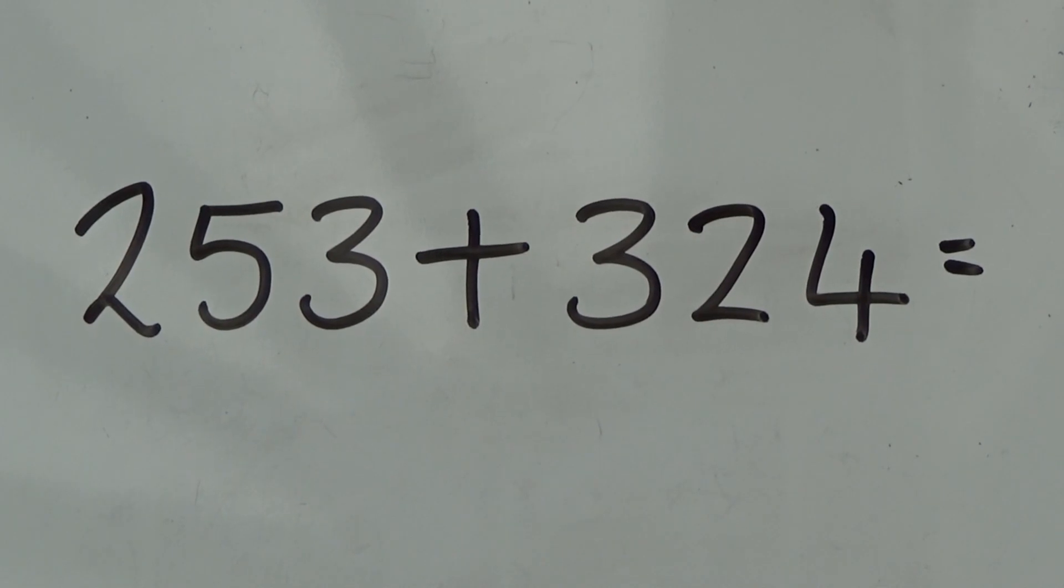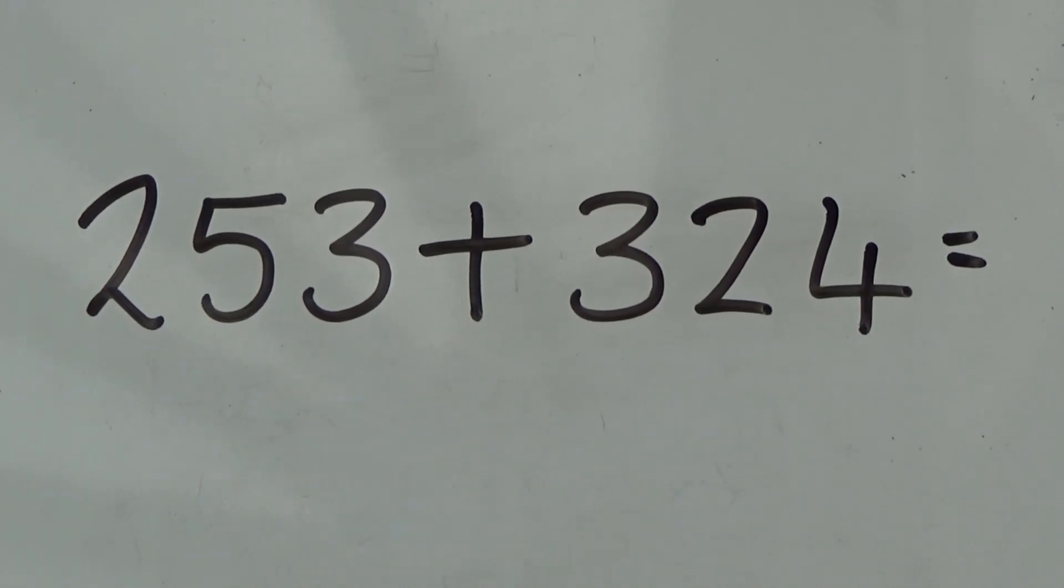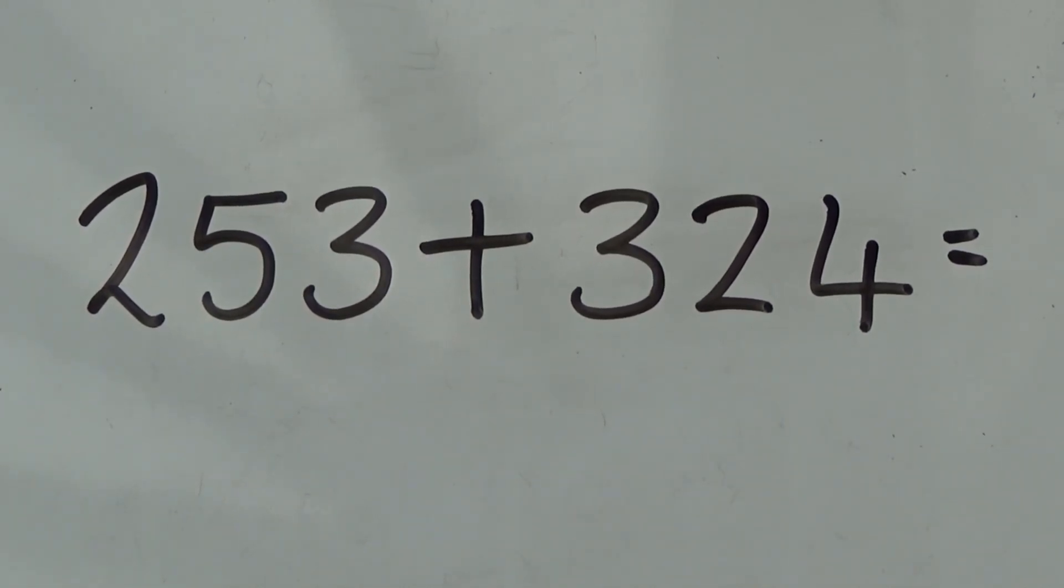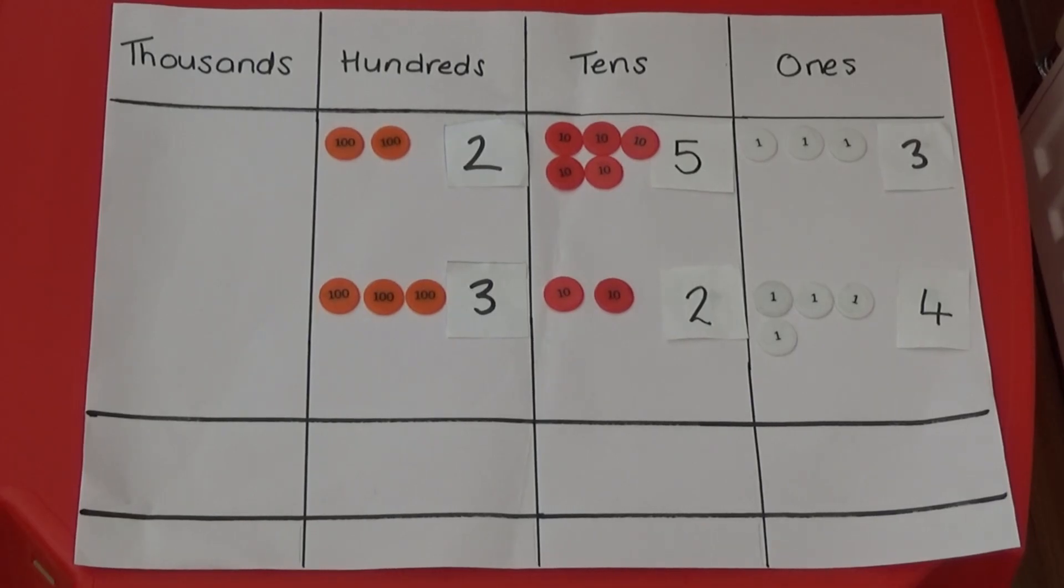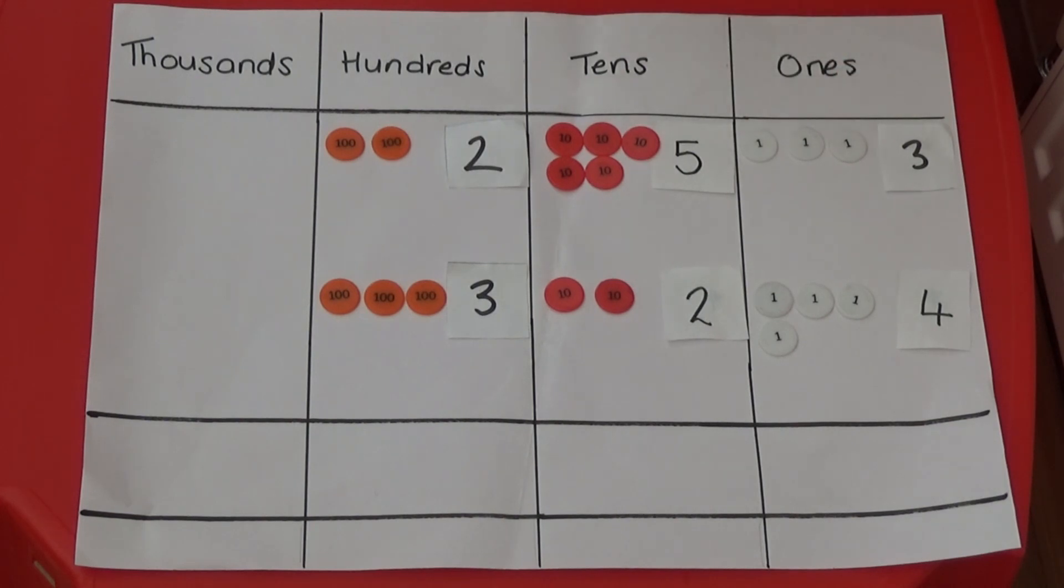First I'm going to show you how to add 253 and 324. I have made the number 253 using two 100s counters, five 10s counters and three 1s counters and underneath I have made the number 324 using three 100s counters, two 10s counters and four 1s counters.